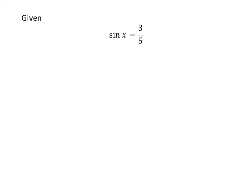It's given that sin of x is equal to 3 upon 5 and x lies in the second quadrant. We know the famous trigonometry identity: square of sin of x plus square of cosine of x is equal to 1.